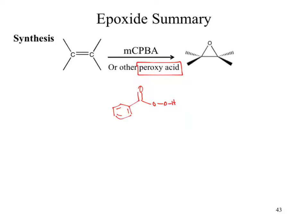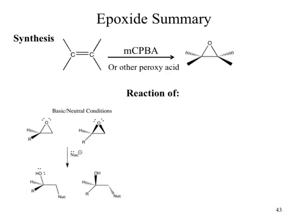Once we've formed the epoxide, we can then go through and react it. Depending on the conditions we run the reaction under, we get different products. If we run under basic or neutral conditions, we have an interesting dilemma — the biggest of which is that while we have a strained three-membered ring, do we have a good leaving group? No. If that pops off, we end up with O minus. O minus is a bad leaving group because it's charged — that's one big aspect.